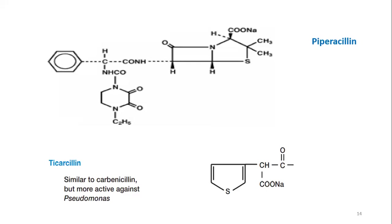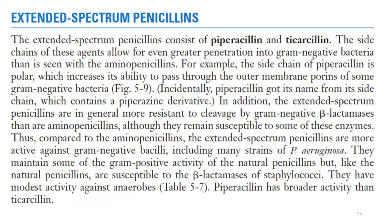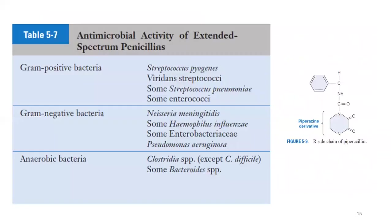Very few bacteria have shown resistance to piperazine and ticarcillin. You can read the text form on screen as notes. These penicillins were acting against Pseudomonas aeruginosa and different anaerobes, giving them a broader activity. Looking at the antimicrobial activity chart of extended spectrum penicillins, the major bacteria previously showing resistance to different penicillins are now susceptible — including gram-positive, gram-negative, and anaerobic bacteria.